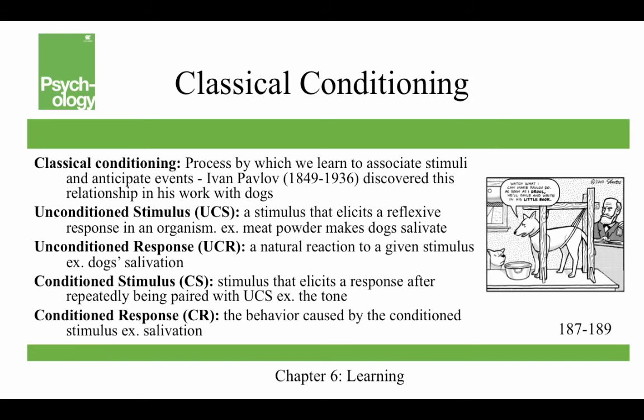In classical conditioning, this is a process by which we learn to associate stimuli and anticipate events. The person who came up with this is Ivan Pavlov. Does the name Pavlov ring a bell? Pavlov discovers the relationship in his work with dogs. He wasn't actually studying learning — he was studying digestion, and he wins the Nobel Prize in physiology. Classical conditioning is something he serendipitously discovers while studying dog digestion.